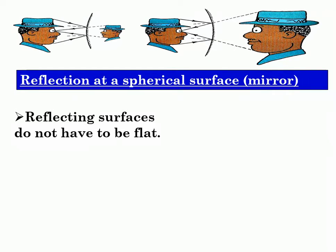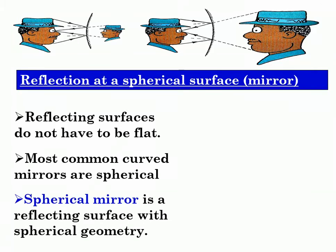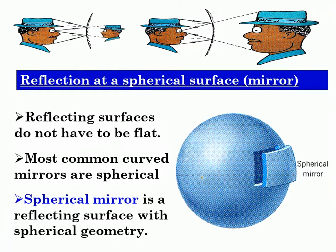Reflecting surfaces don't always have to be flat like a plain mirror or the mirror that you use at home. The most common curved mirrors are actually spherical, which means they are part of a sphere. A spherical mirror is a reflecting surface with spherical geometry — we have the diameter, the center of the sphere, and the radius. If I have a hollow spherical object and I were to cut a portion of this sphere out, I will actually create my spherical mirror.